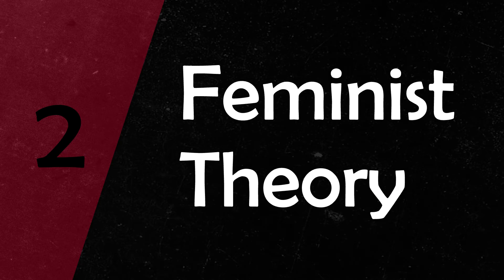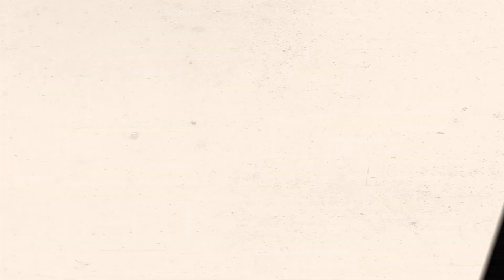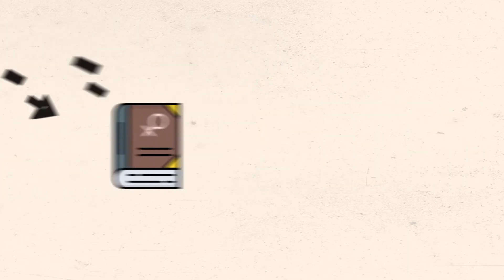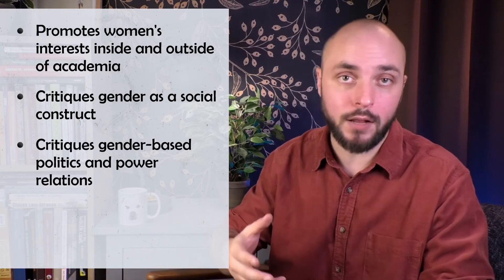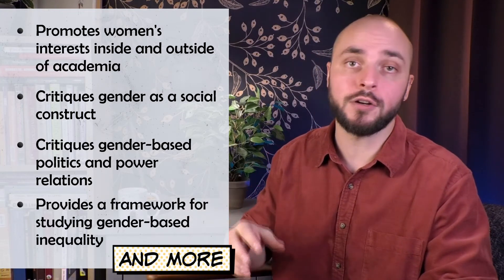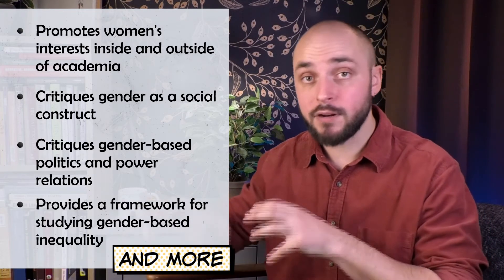Number two on the list is feminist theory, which refers to the ways in which feminism as a political movement has influenced the theoretical and institutional development of different academic disciplines. In the humanities, the fields most influenced by feminist scholarship are probably anthropology, sociology, art history, women's studies, and literary criticism. What people sometimes fail to understand is that feminist scholarship does much more than promote women's interests—it also offers critiques of gender as a social construct, of gender politics and power relations, and most significantly provides a framework for understanding gender-based inequality in different cultural contexts.